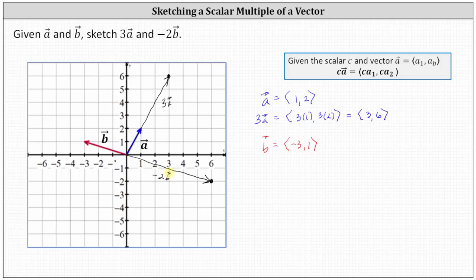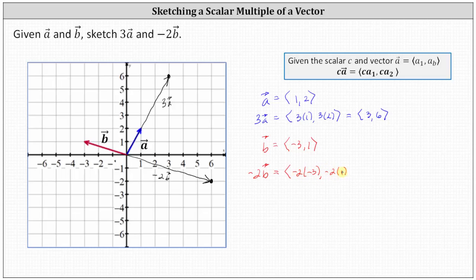Notice the vector has twice the magnitude of vector b and points in the opposite direction. To find the component form, we multiply the components of vector b by negative two. So the x component is negative two times negative three, and the y component is negative two times one. Simplifying, the x component is positive six and the y component is negative two, which matches our graph.